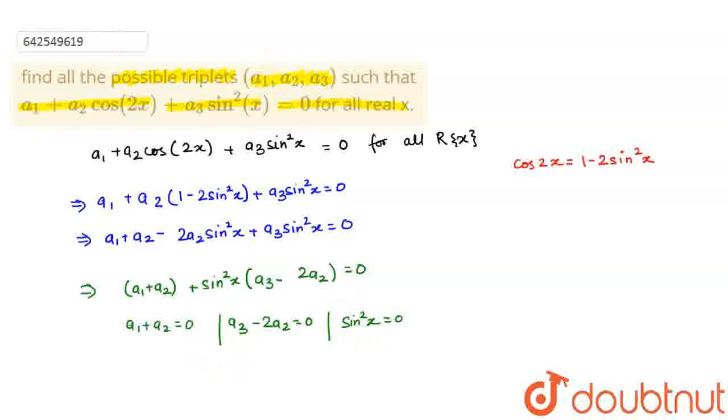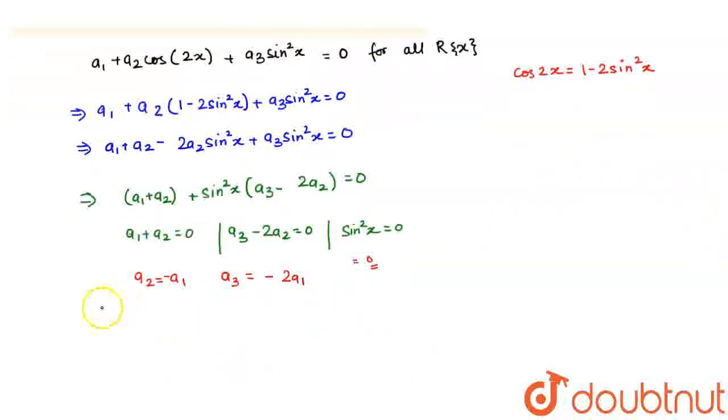So now, by this, a2 equals minus a1, and a3 equals minus 2a1. This third equation equals 0 - we don't need this because we have to find the triplets, which should be constant values.